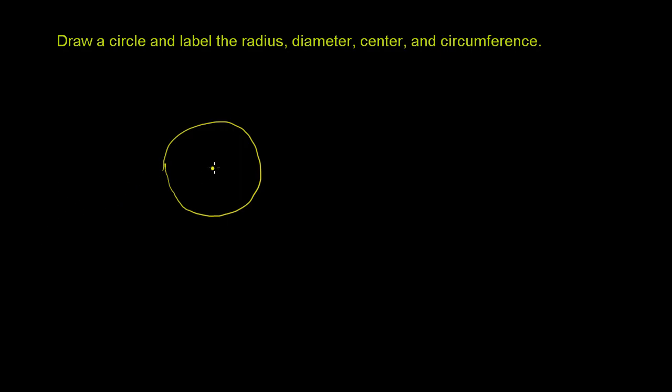I'm going to label the center over here. I'll call it C. That is my center. I'll draw an arrow there. That is the center of the circle.